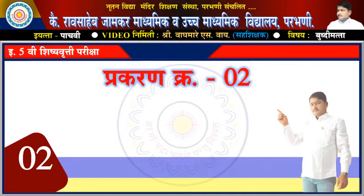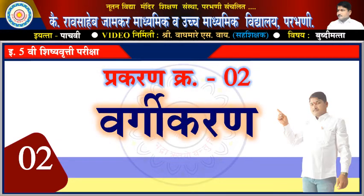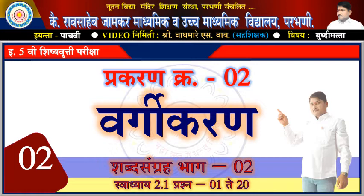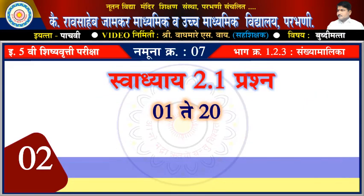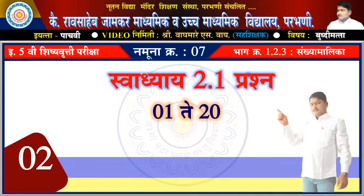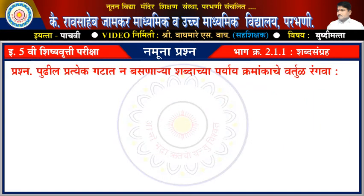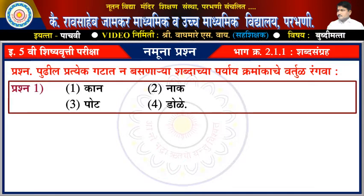પ્રકરણ ક્રમાંક દોન - વર્ગીકરણ શબ્દ સંગ્રહ ભાગ દોન. પ્રશ્ન એક: પ્રશ્ન પહીલા - એક કાણ, દોન નાક, તીન પોટ, ચાર ડોલે.